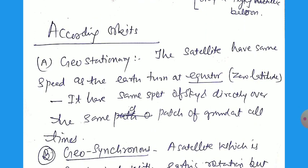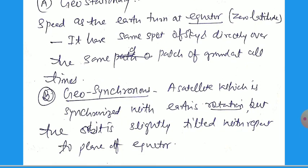According to orbiter type, there are geostationary and geosynchronous satellites. The geostationary satellite is located at the same speed as the earth turns at the equator, zero latitude. Hence it is situated at the equator and always covers the same spot in the sky over the same point on the ground at all times. The geosynchronous satellite is synchronized with earth's rotation, but its orbit is slightly tilted with respect to the plane of the equator — it is not exactly at the equator but tilted relative to it.